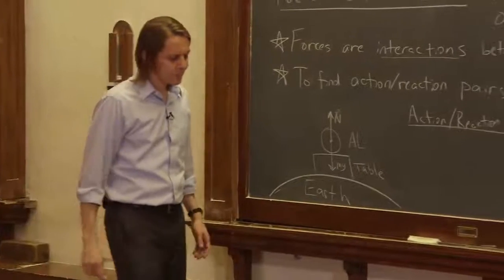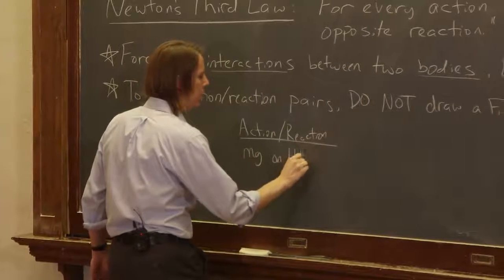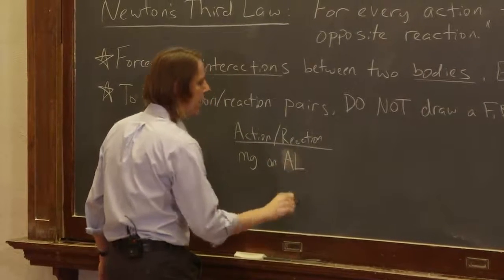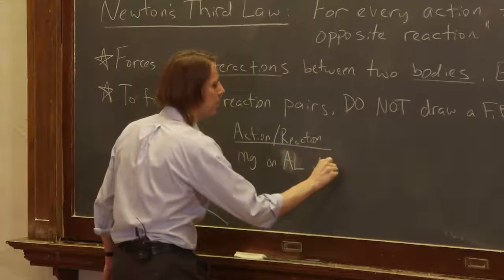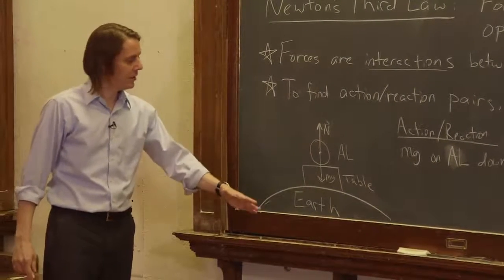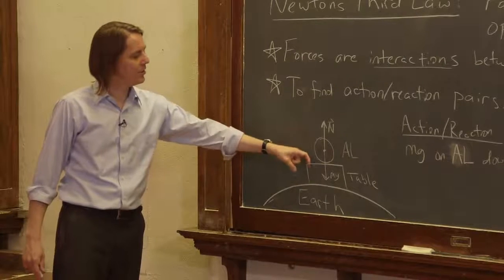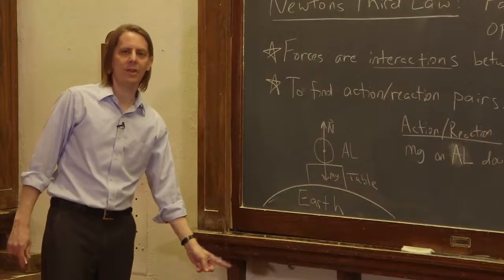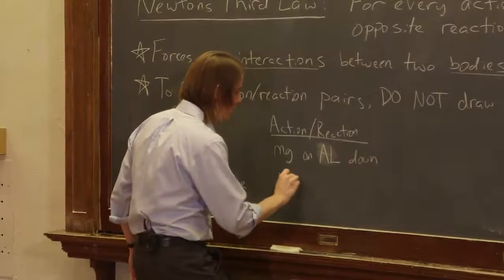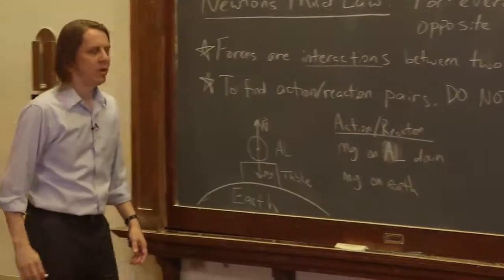We have the force Mg on Al, and that's down. So what is the action-reaction pair for that force? It's actually that Al pulls up on the earth. Just like Al feels a gravitational attraction to the earth, the earth feels a gravitational attraction to Al. And guess what its magnitude is? Mg. Mg on the earth, and which way? It's up.